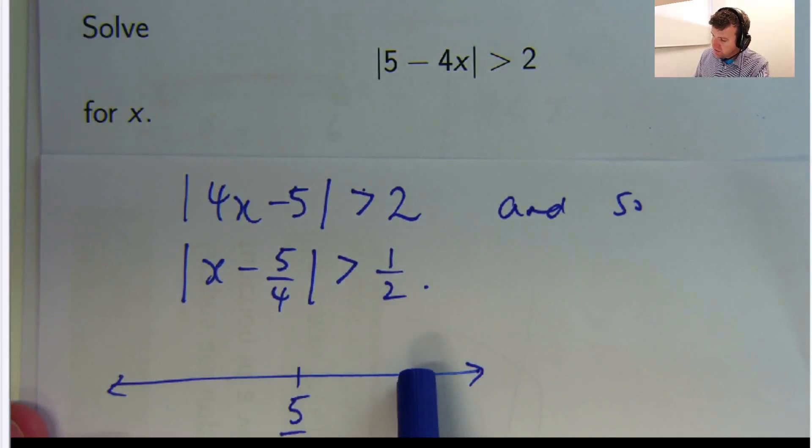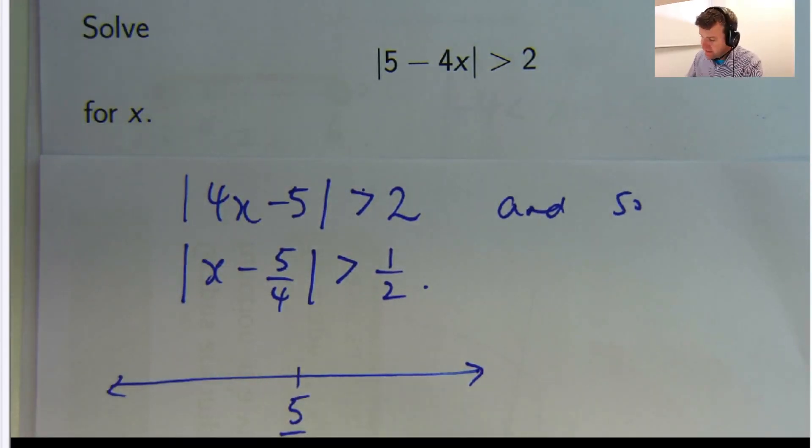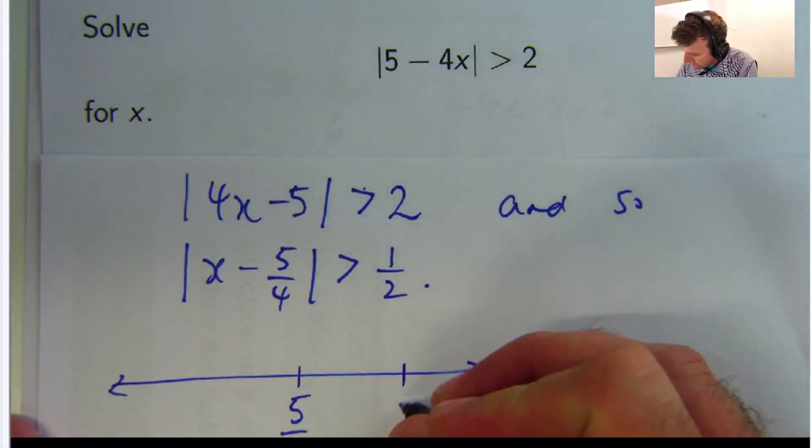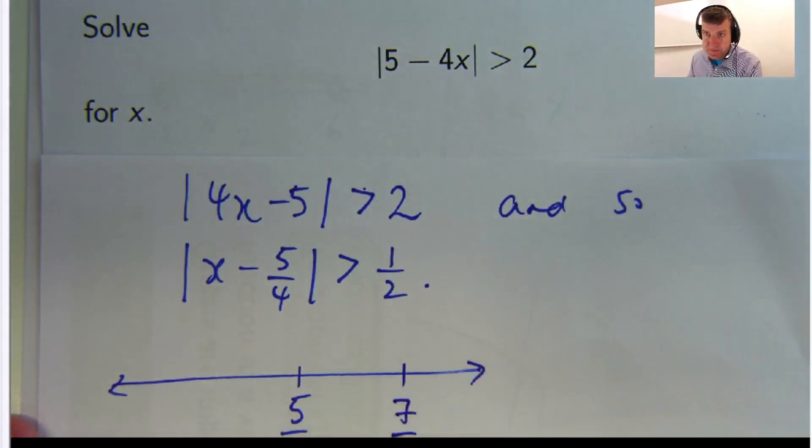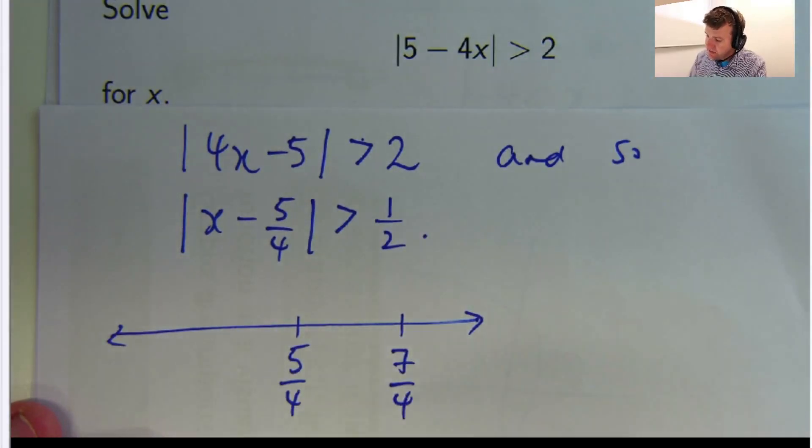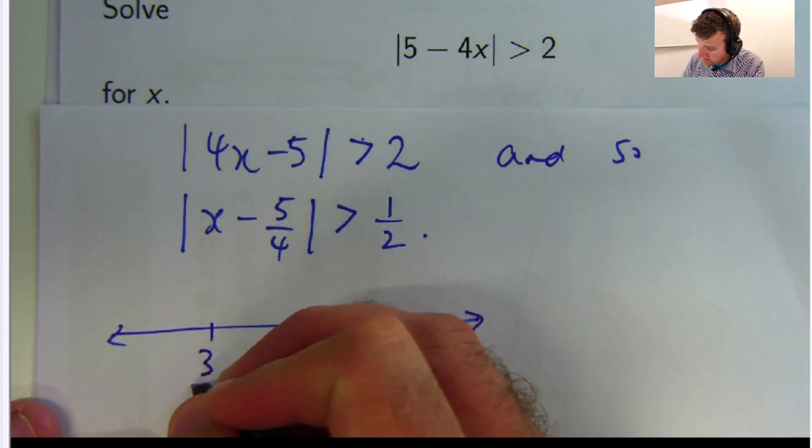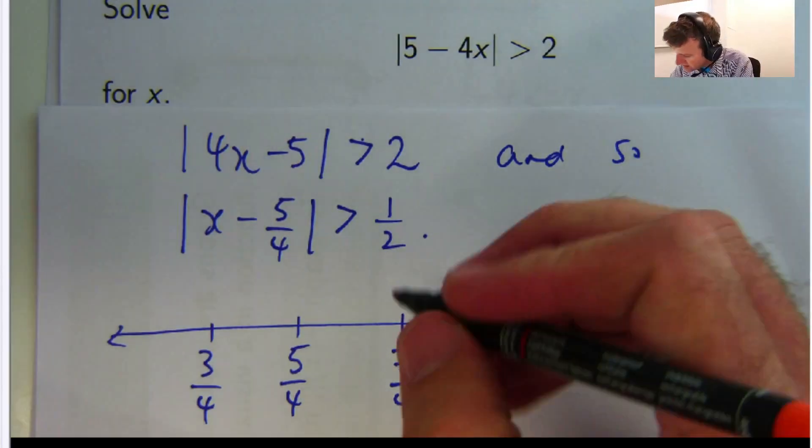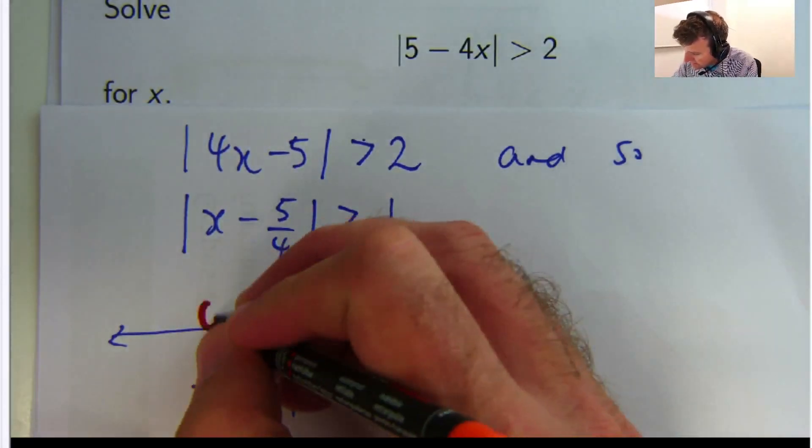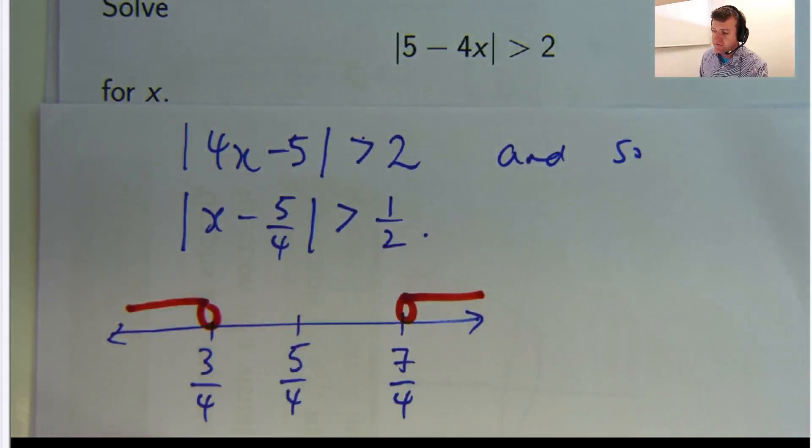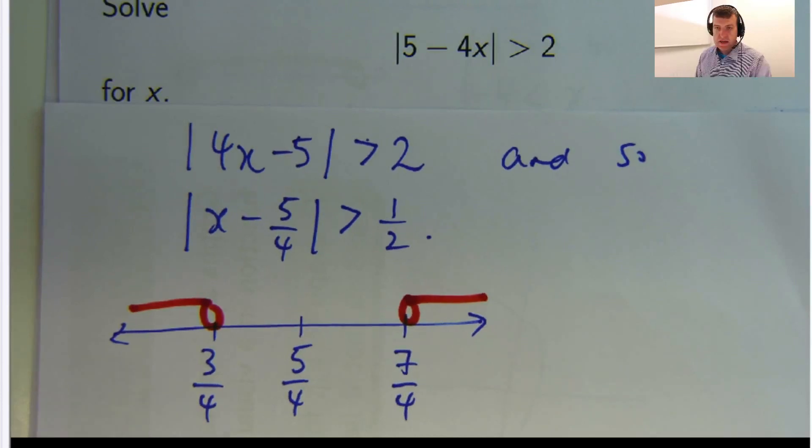5 on 4. And I go half a unit to the right, half a unit to the left. So 5 on 4 plus a half will be 7 on 4. And 5 on 4 minus a half will be 3 on 4. Okay, so if I'm to draw in my solution, we want all those points here that are at least half a unit away from 5 on 4.